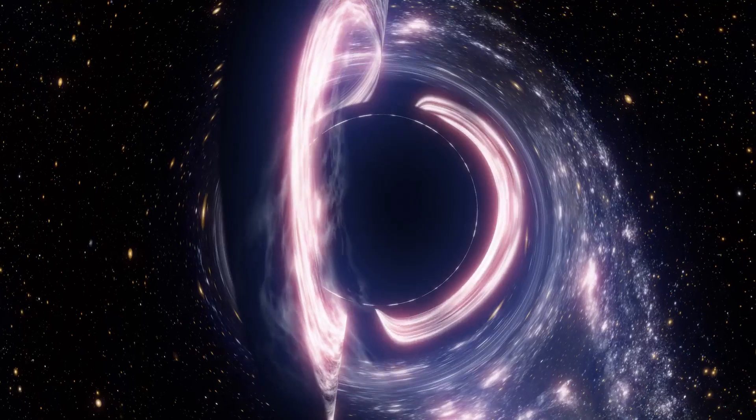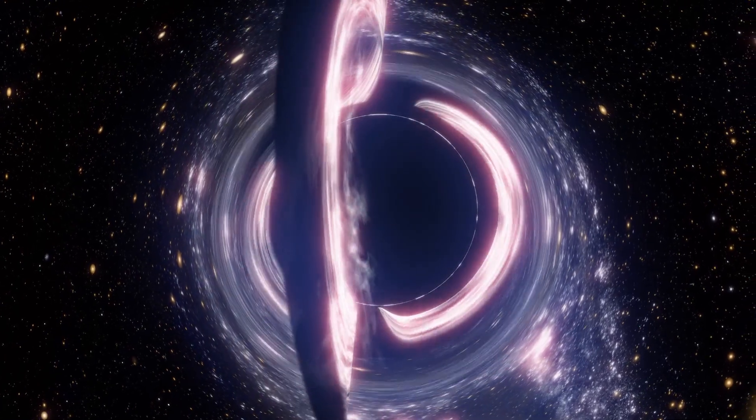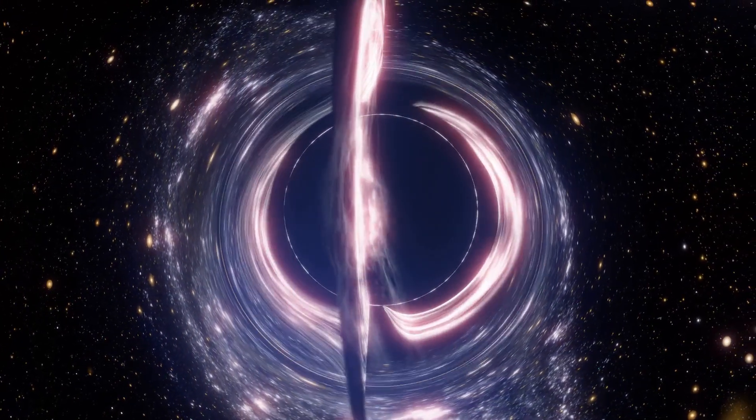Black holes are some of the most mysterious objects in the universe. They're regions of space-time where gravity is so strong that nothing, not even light, can escape. Imagine a giant vacuum cleaner in space sucking up everything in its path. But how do black holes form? Well, it all starts with a star much more massive than our sun. When this star runs out of fuel, it collapses in on itself, creating a black hole. Pretty intense, right?